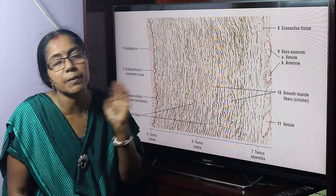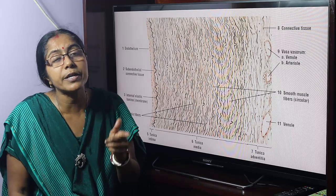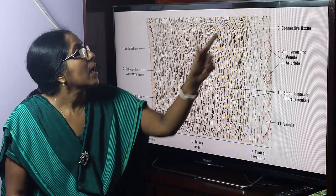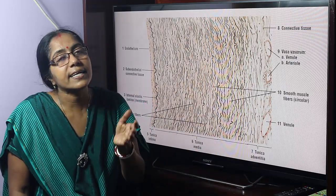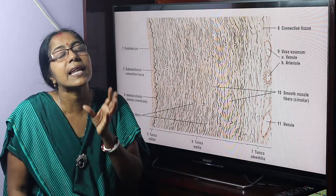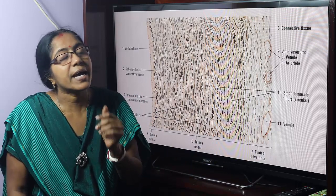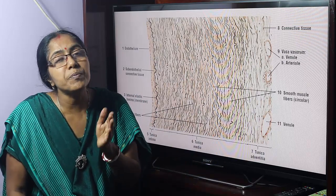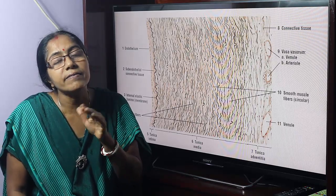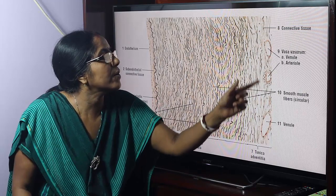Tunica adventitia is a thin connective tissue layer. Connective tissue layer means connective tissue cells and connective tissue fibers. This part is called the vasa vasorum. What do you mean by vasa vasorum? The vessels supplying the vessels are termed as vasa vasorum. The large artery is supplied with this arterial vein.